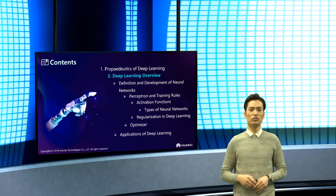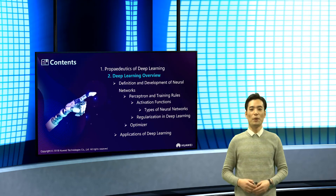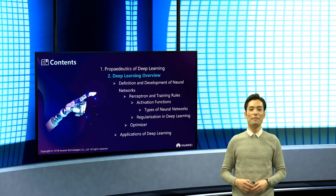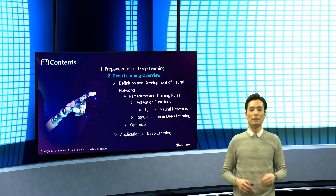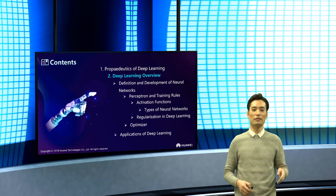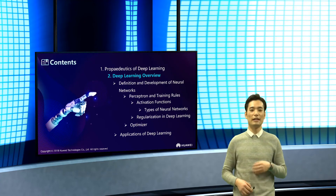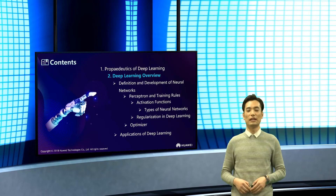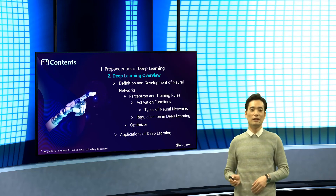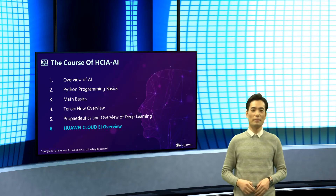In the second section of chapter five, we will learn the definition and development of neural networks, perceptrons, training rules, activation functions, types of neural networks, regularization, optimizers, and applications of deep learning. The last chapter is Huawei Cloud AI overview.